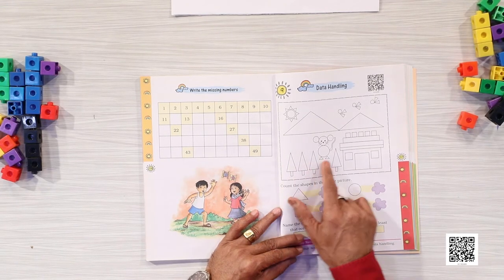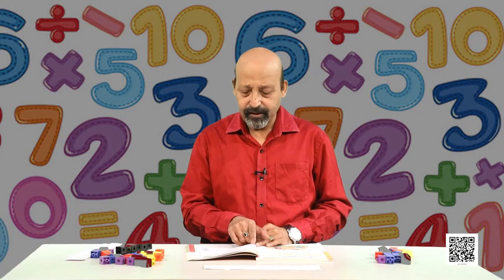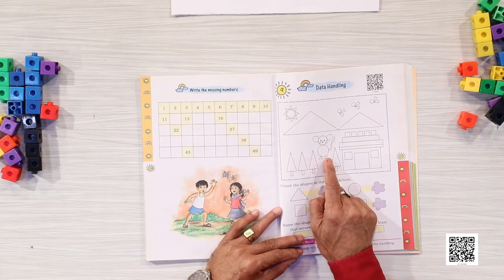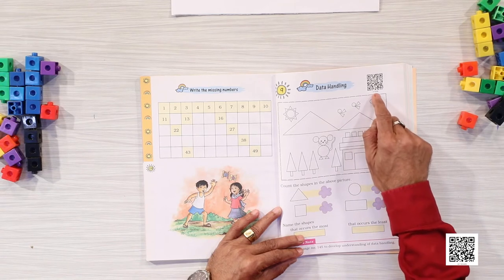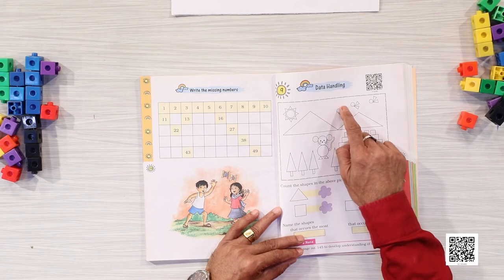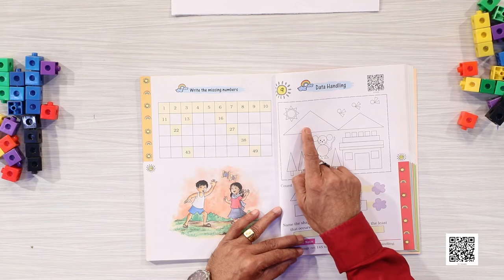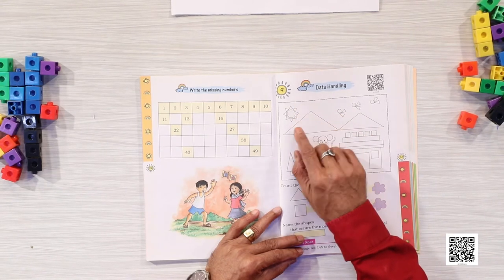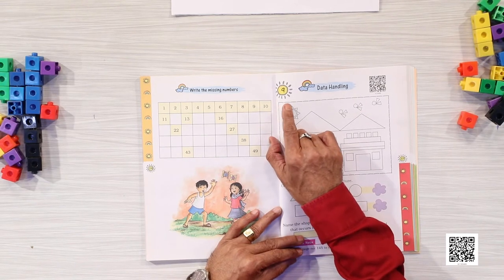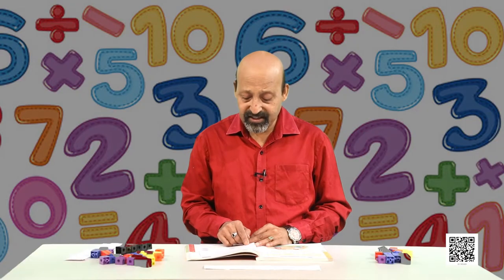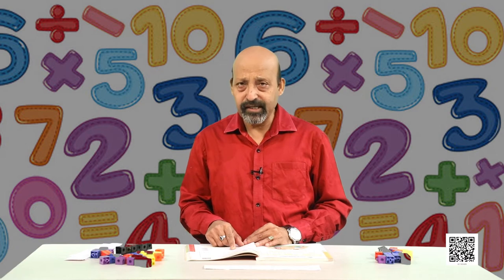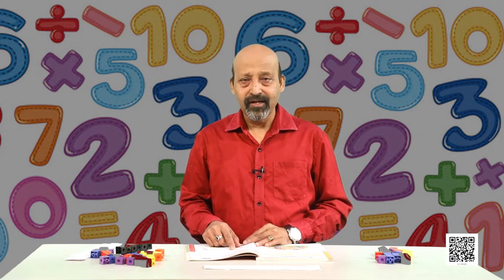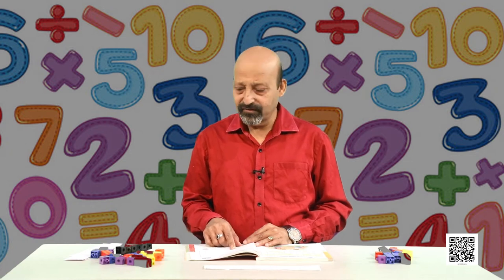Count how many such shapes are there in this whole picture. Let us count together: 1, 2, 3, small small 4 and 5, then this bigger one 6, 7, 8, 9, 10, 11, 12, 13, 14 — a lot of shapes are here — again 14, then 15, 16, 17, 18, 19, 20, 21 and 22. So how many total such shapes are there? 22. Do you know how to write 22? Yes, from the last chapter, 22 is 20 and 2 — it has 2 tens and 2 ones — so it can be written as 22.